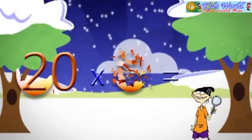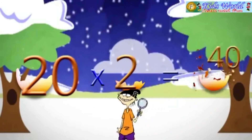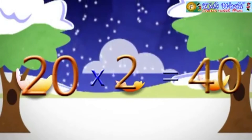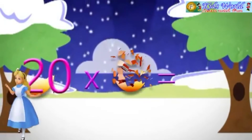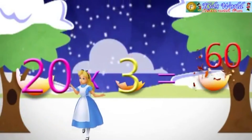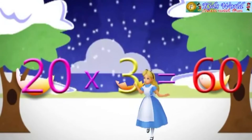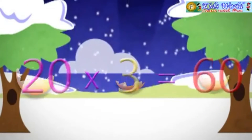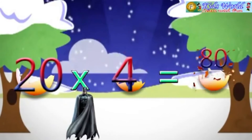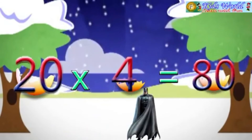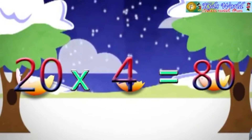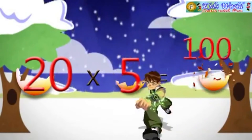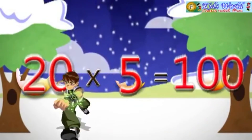Table 20. 20 into 1 is equal to 20. 20 into 2 is equal to 40. 20 into 3 is equal to 60. 20 into 4 is equal to 80. 20 into 5 is equal to 100.